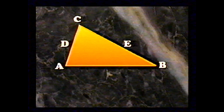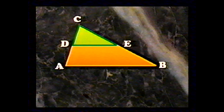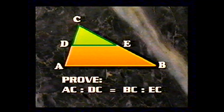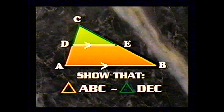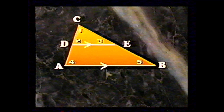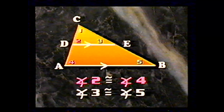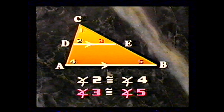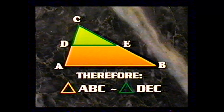Here's an exercise using similar triangles. Given triangle ABC and that line DE is parallel to AB, prove that AC and BC are proportional to DC and EC. Angles two and four are congruent since they are corresponding angles of parallel lines, and angles three and five are also congruent for the same reason. Then triangles ABC and DEC are similar by AA, and therefore the sides are proportional.